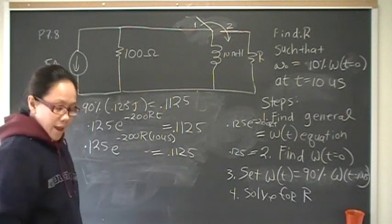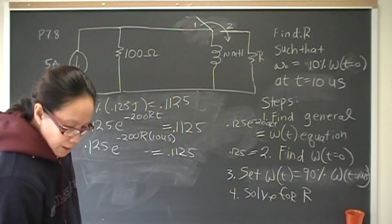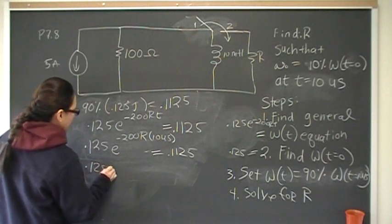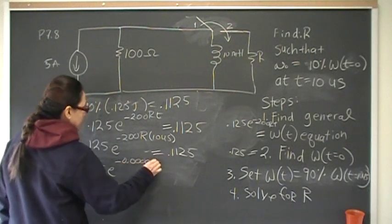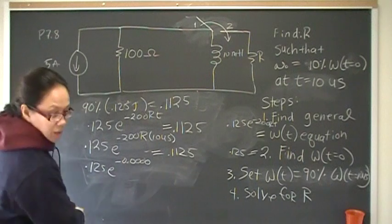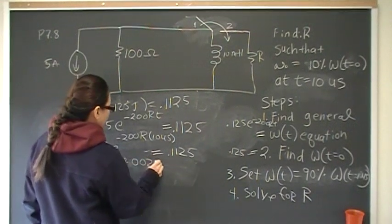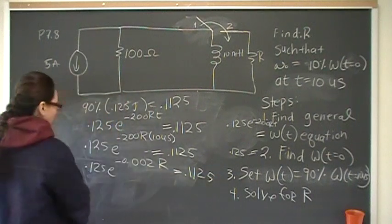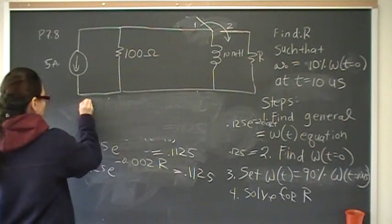So in the exponent, I have negative 200 times 10 e minus 6, and that leaves me negative 0.002. 0.125 e to the negative 0.1234 zeros. Is that right? 1, 2, nope, only two zeros. 0.002 r is equal to 0.1125. And we want to solve for R to bring R down. We take the natural log of both sides. 0.125.